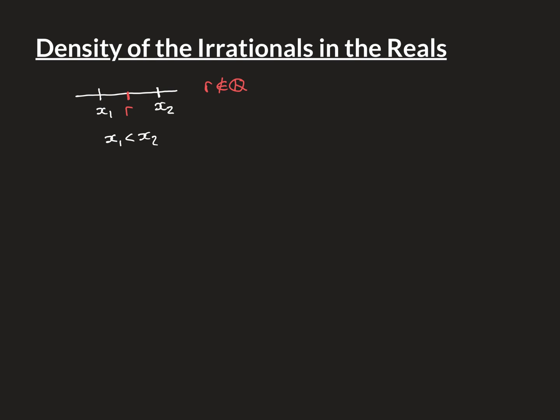In the previous video, we showed this is also true for the rationals — take any two distinct real numbers and there's always a rational number in between the two as well. So density holds true for both the rationals and the irrationals.